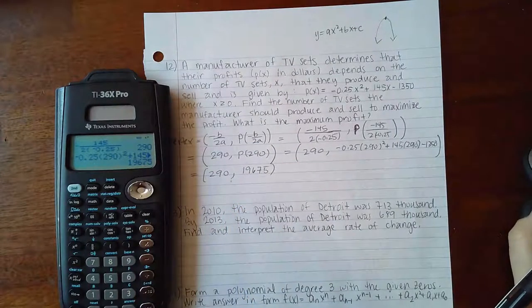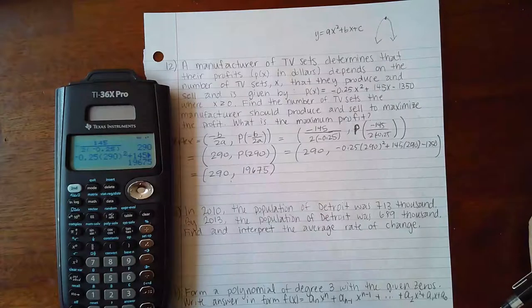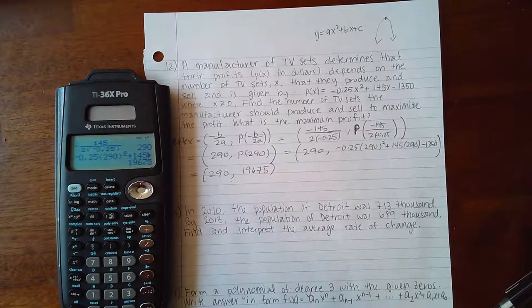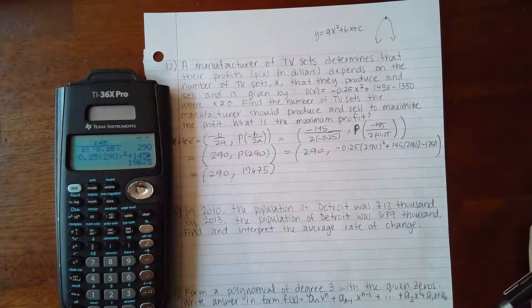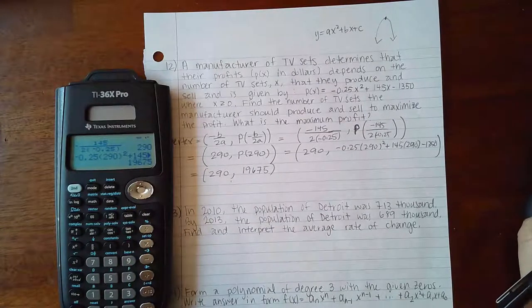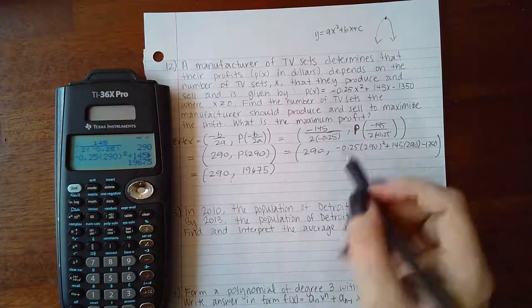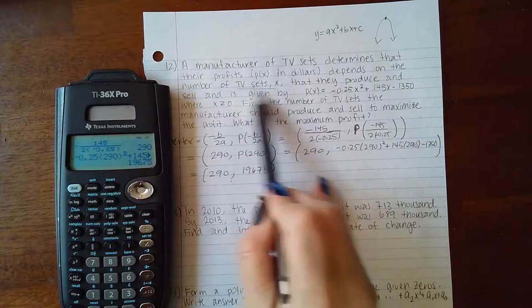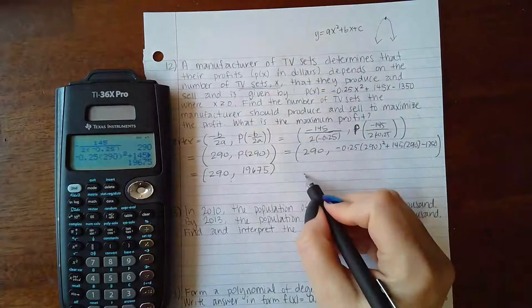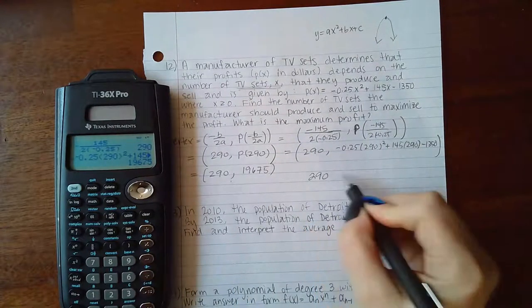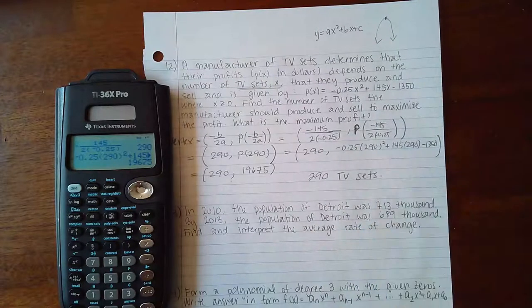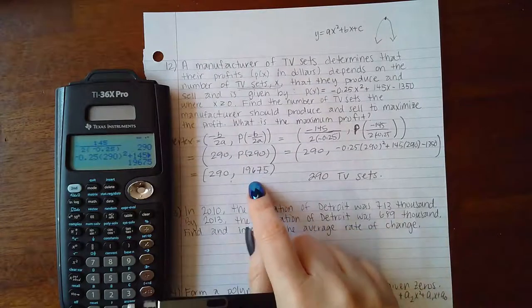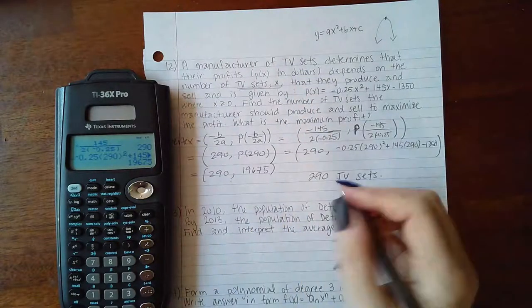Which is the answer to the first part of the question, and which is the answer to the second part? The problem asks to find the number of TV sets. Remember, x is the number of TV sets, so 290 TV sets have to be produced to reach maximum profit. The y-value in dollars, $19,675, is the maximum profit. Now we've answered both questions.